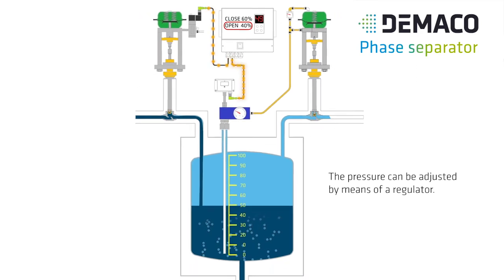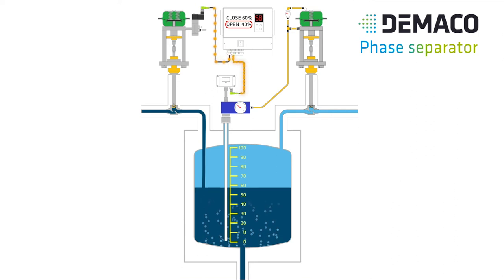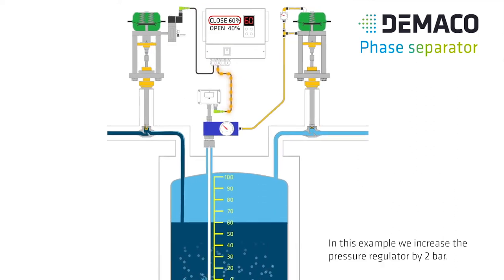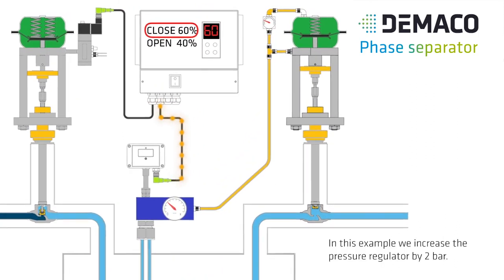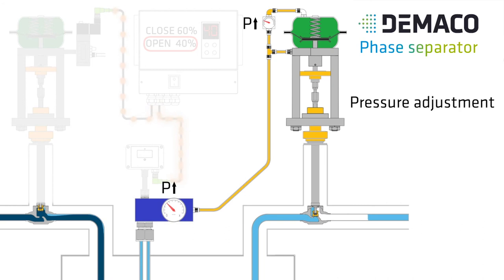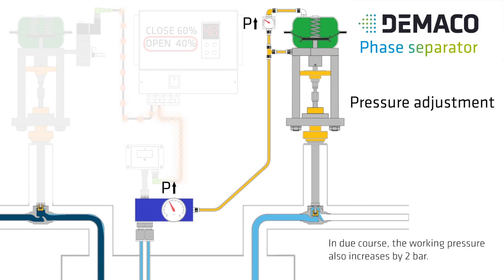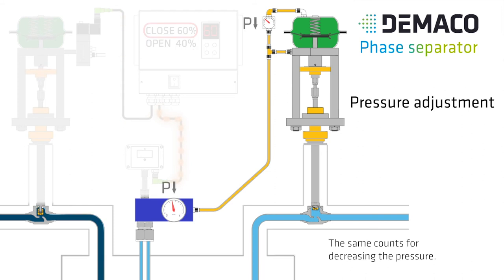The pressure can be adjusted by means of a regulator. In this example we increase the pressure regulator by 2 bar. In due course the working pressure also increases by 2 bar. The same counts for decreasing the pressure.